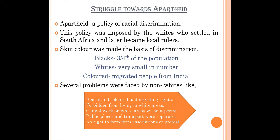What were the problems faced by non-whites? First, white rulers treated non-whites as inferior and did not give them any voting rights. Second, they were forbidden from living in white areas. Third, they could not work in white areas without a permit — non-whites did all sorts of menial work like plumbing or garbage cleaning, and needed a permit to enter white areas.